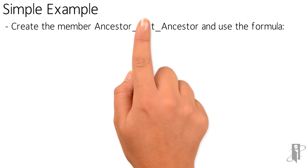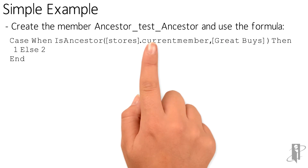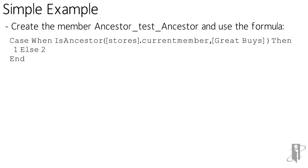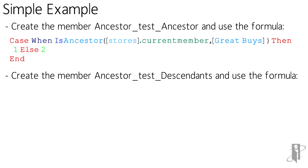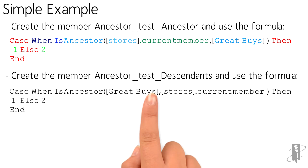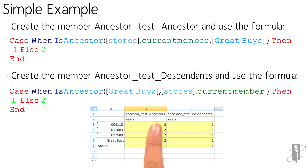I'm going to create a member called Ancestor Test Ancestor and use that first formula. Next, I'm going to create another member called Ancestor Test Descendants and use that second formula. When I retrieve the data...